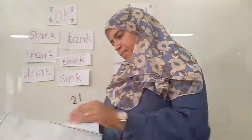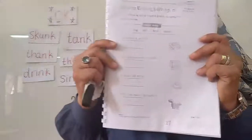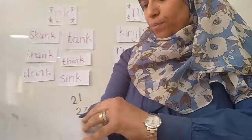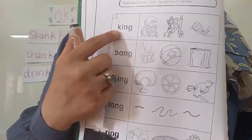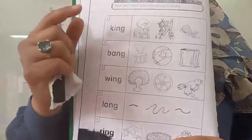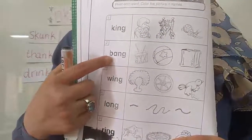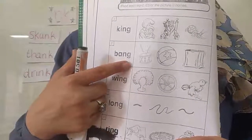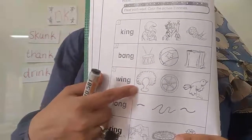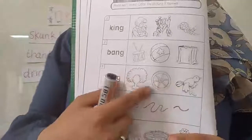Page 27 — you will do it by yourself. It's homework, with the same words. Page 28 — what's the first word? King. Where is the king? You know where the king is. Bang. Which one is bang? The drum makes a sound — bang. Wing. The wing of the bird.